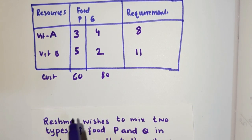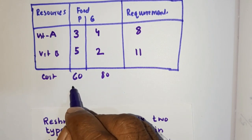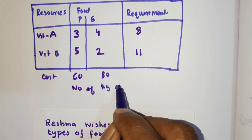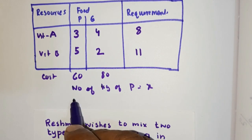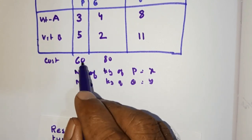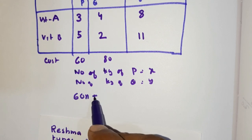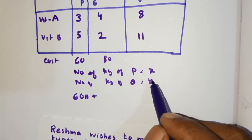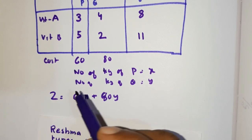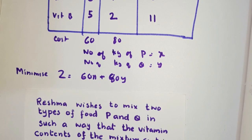We let x be the number of kilograms of P and y be the number of kilograms of Q. The cost of x kilograms of P at 60 per kilogram is 60x. We need to minimize our total cost function.